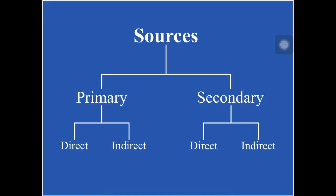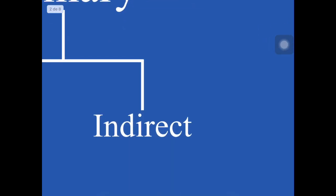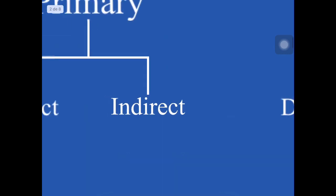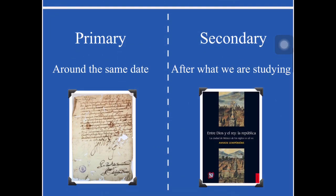Usually secondary sources will be direct sources, but many times they won't. We can actually find secondary sources that are indirect. Perhaps you won't believe this, but the favorite sources for history-making are primary sources — but the real favorites for historians are actually the indirect sources, and we're going to see why.